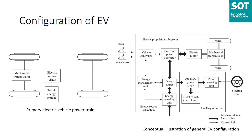Most EV batteries, as well as ultra-capacitors and flywheels, readily possess the ability to accept regenerative energy. The energy management unit cooperates with the vehicle controller to control regenerative braking and its energy recovery. It also works with the energy refueling unit to control refueling and monitor the usability of the energy source. The auxiliary power supply provides the necessary power at different voltage levels for all EV auxiliaries, especially the hotel climate control and power steering units.